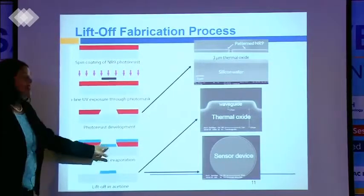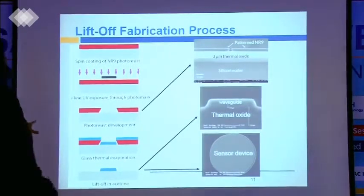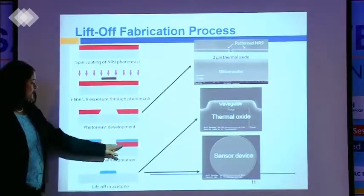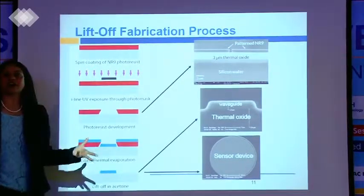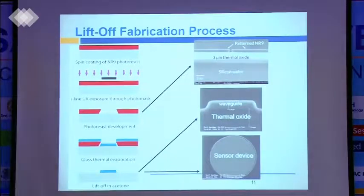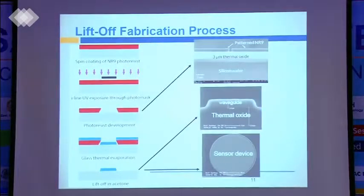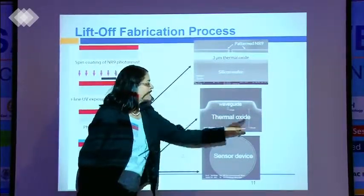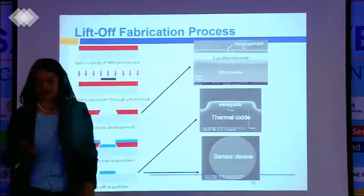Once we do this, we then deposit our chalcogenide glasses through the openings. Right there in blue is the chalcogenide glass. In red is your photoresist. When you put it into acetone, it just lifts off the red part — the photoresist — leaving behind your blue region, which is what you want: your sensor. This sensor has the waveguide on top, a thermal oxide underneath which is a cladding material, and the sensor device is the ring resonator that I talked about.